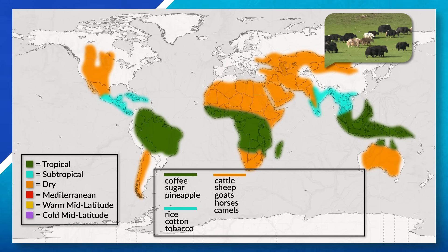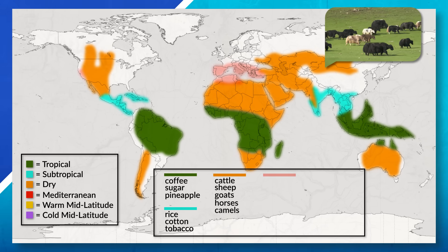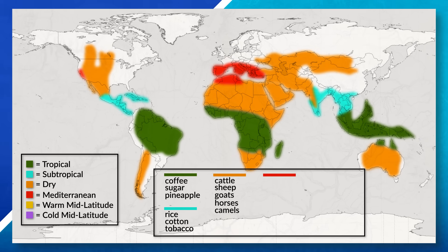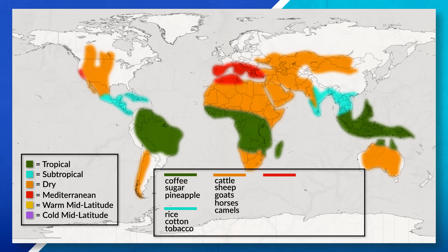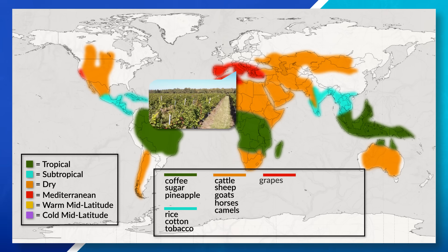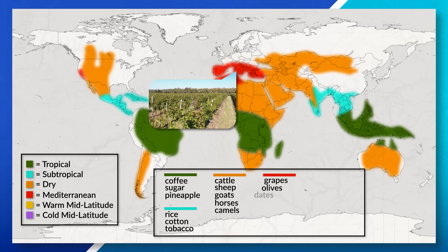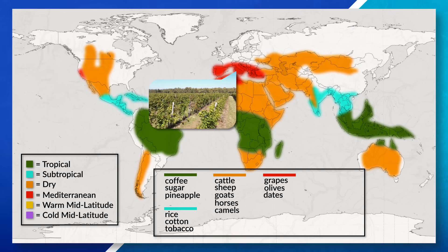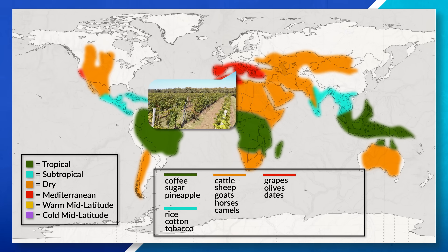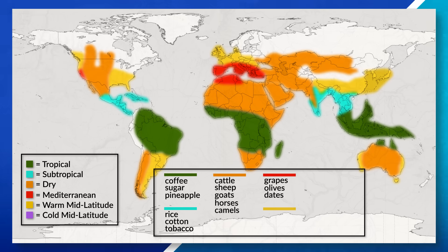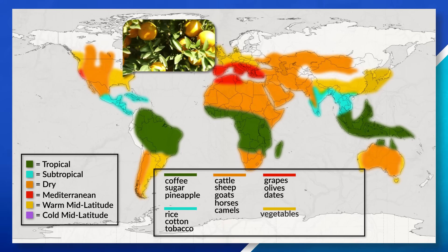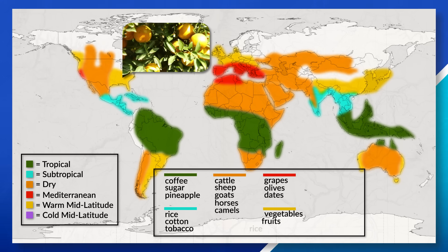While Mediterranean climates such as California, Chile, or geographic areas that surround the Mediterranean Sea will often see the production of grapes, olives, and dates. Moving into warm mid-latitude climates like southern China and southern parts of the United States, we often see different vegetables, fruits, and rice being produced.